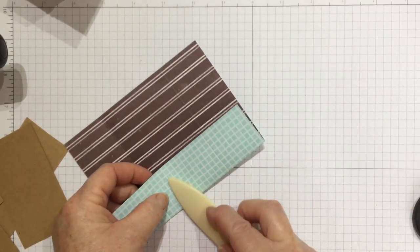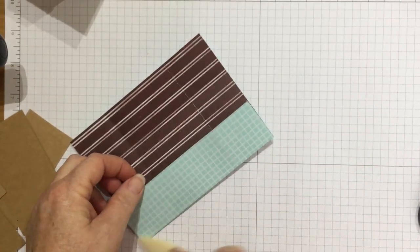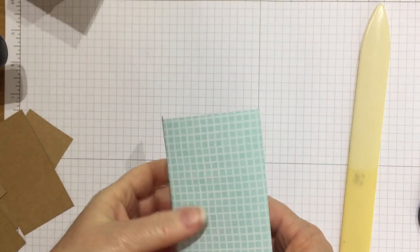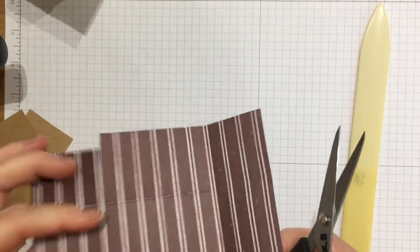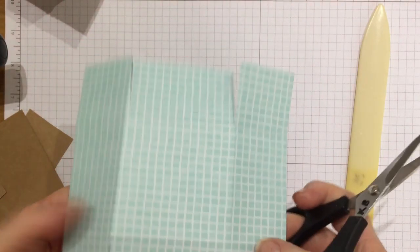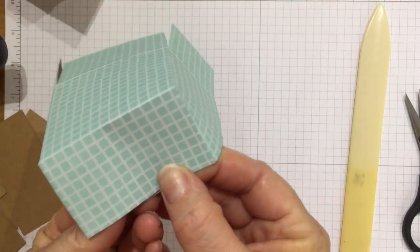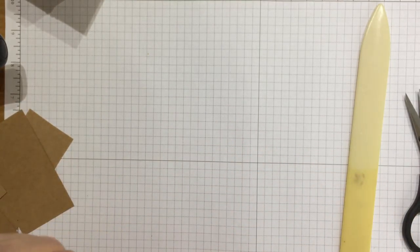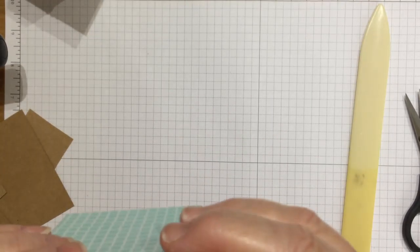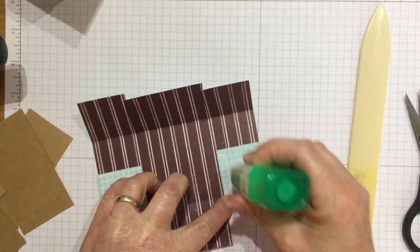I'm going to do the same scoring all around. I don't have to be so hard on the bone folder with designer series paper - it's not as thick and you don't want it to tear. I'm going to go up the sides and do exactly the same as I've done before. These flaps are going to tuck in.